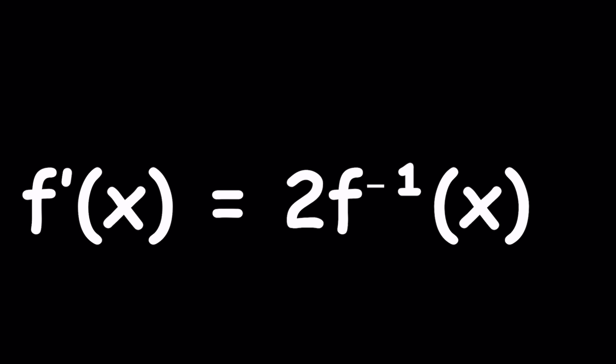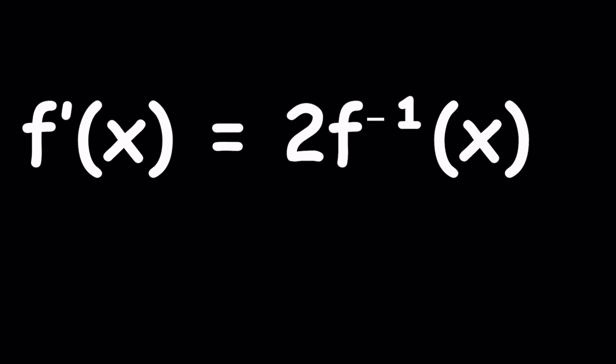When I write f to the power negative one of x, I don't mean the reciprocal of f of x, but rather the functional inverse of f of x. We've done a similar problem before without the two, like a function whose derivative equals its inverse. But this is a little different because this time we have the derivative equals two times the inverse function.